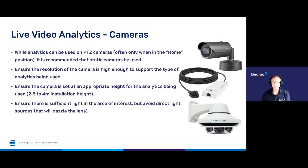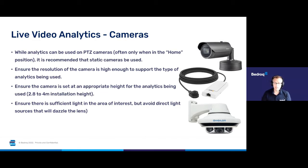While analytics can be used on PTZ cameras, it is often only in a home position — if an operator moves the camera slightly out of home, the system stops doing analytics. So we always recommend that static cameras be used if possible. You also need to ensure the resolution of the camera is high enough to support the type of analytics being used, and that the camera is set at an appropriate height — around 2.8 to 4 metres is good for appearance search type analytics. If it's too high you get a lot of tops of heads; if it's too low you get street furniture and other objects getting in the way.